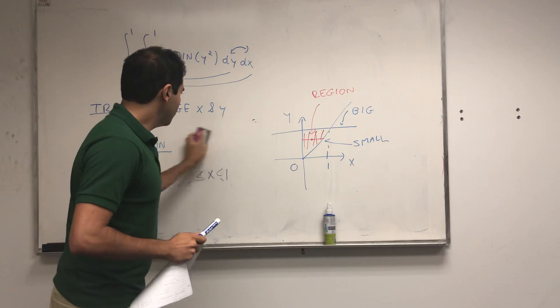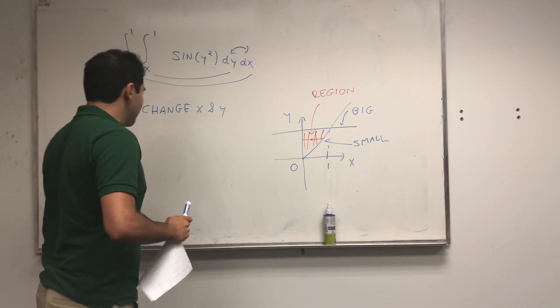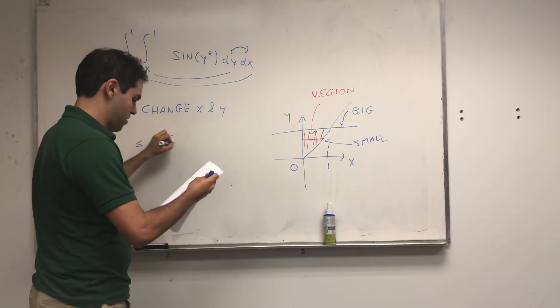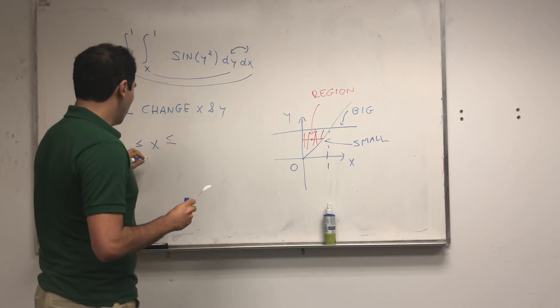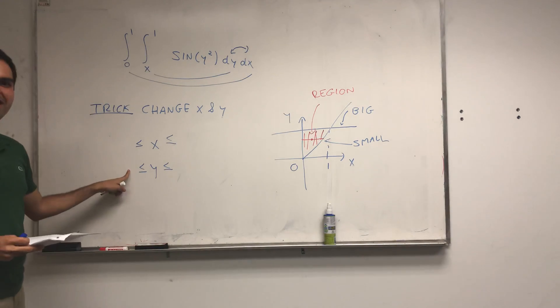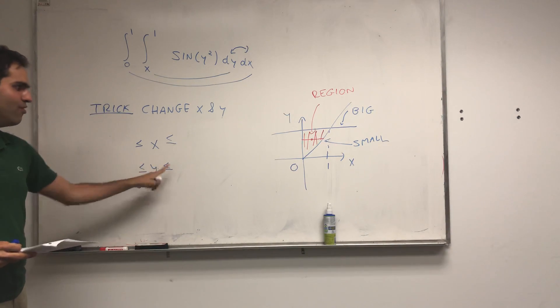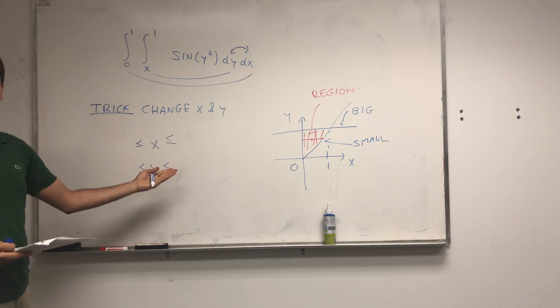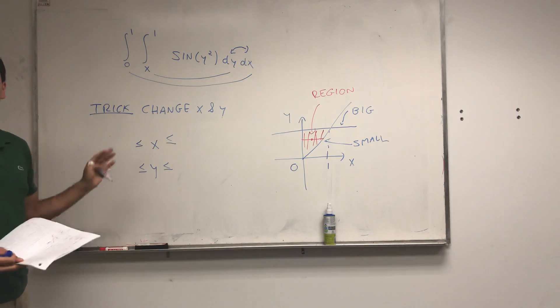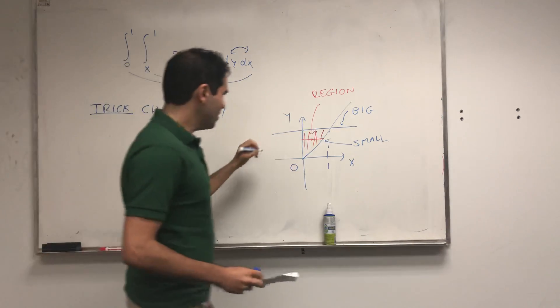And for this, what we have to do is we have to write x is between two things, and y is between two things, where the important thing is for the outer integral for this y here, we need to have constants, and for x, the things can only depend on y.